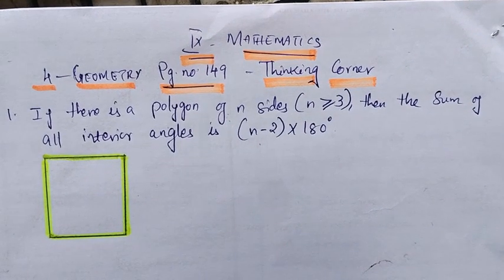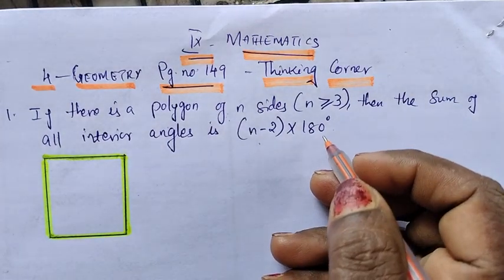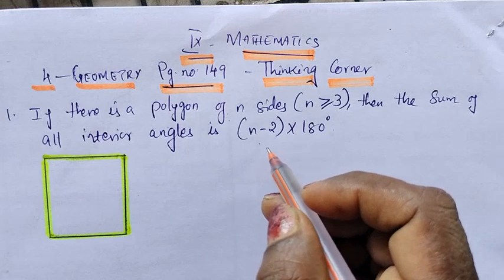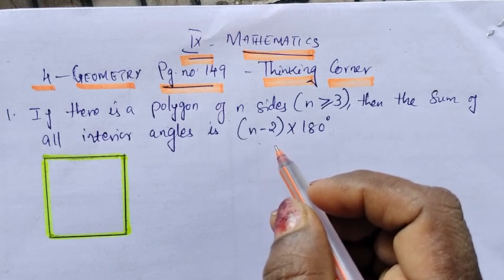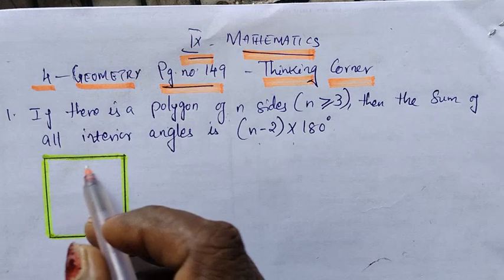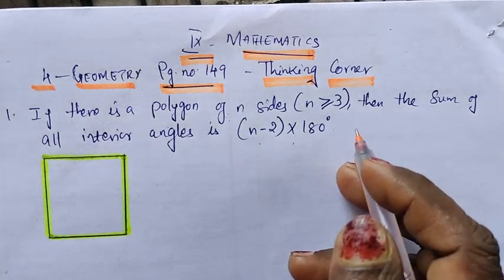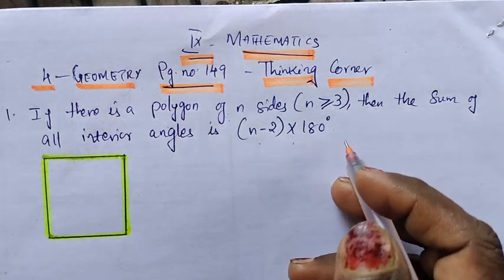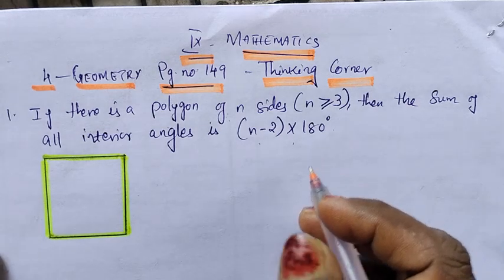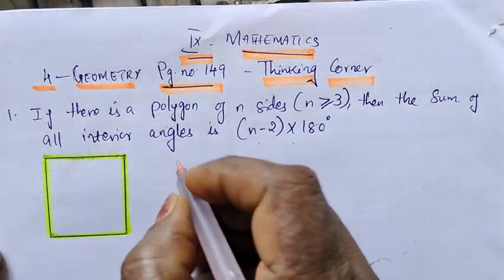First sum: if there is a polygon of n sides, n greater than or equal to 3, then the sum of all interior angles is (n minus 2) into 180 degrees. Consider a square which is a regular polygon.